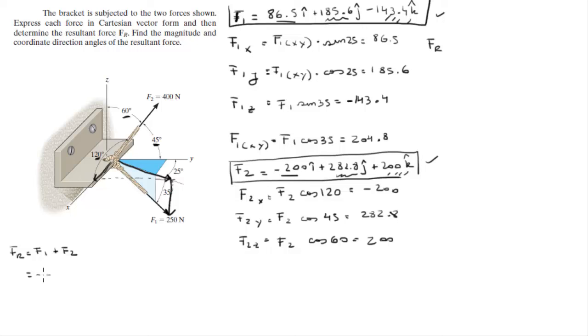And you get that the resultant force is negative 113.5i plus 468.4j plus 56.6k.